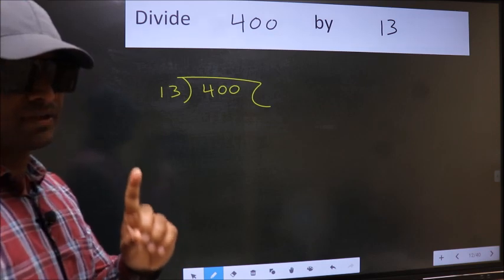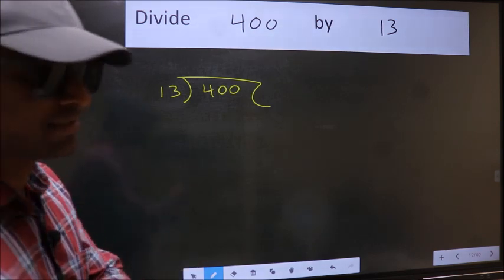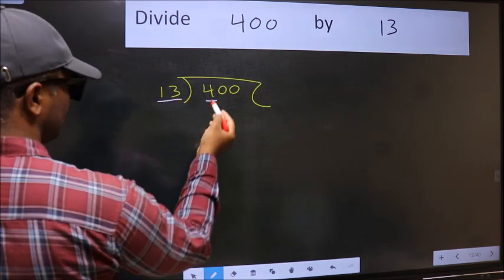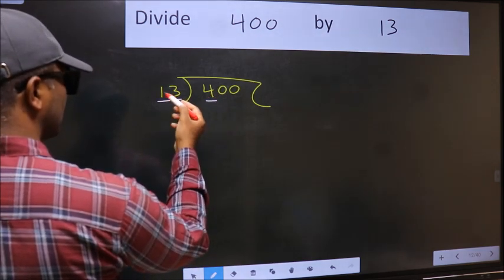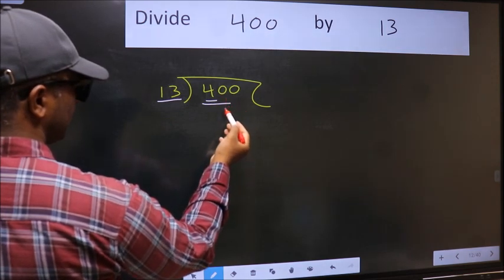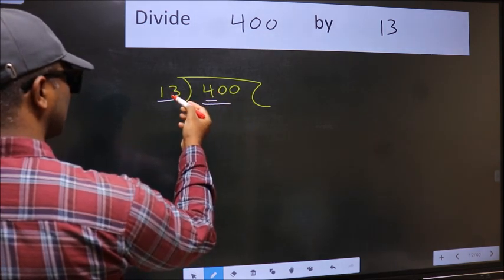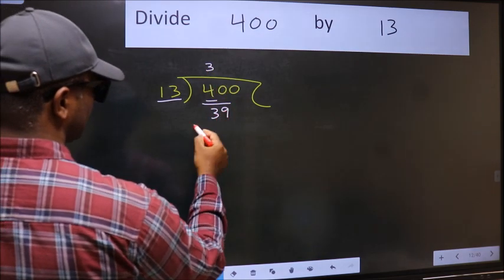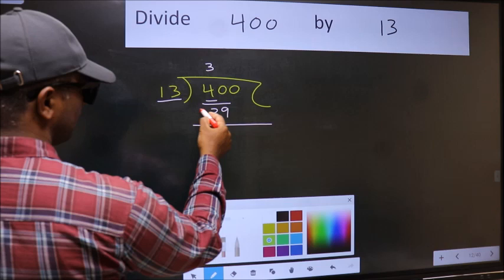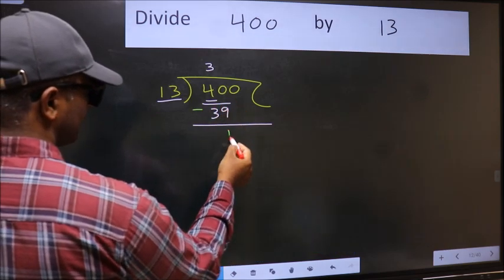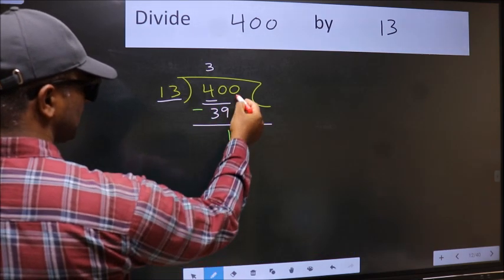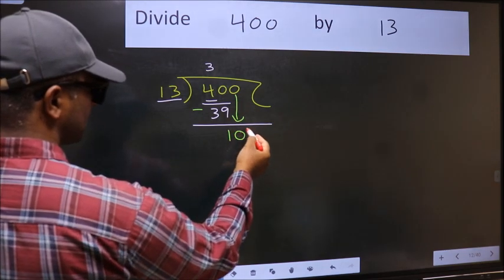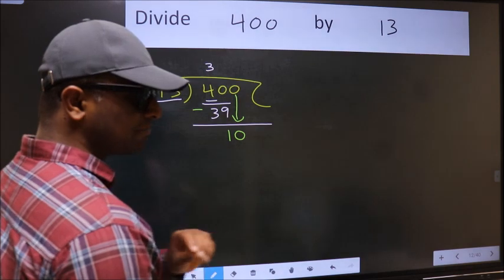Next, here we have 4 and here 13. 4 is smaller than 13, so we should take two numbers: 40. A number close to 40 in the 13 table is 13 threes, 39. Now we should subtract: 40 minus 39 is 1. After this, bring down the beside number, so 0 down. After this step, the mistake happens.